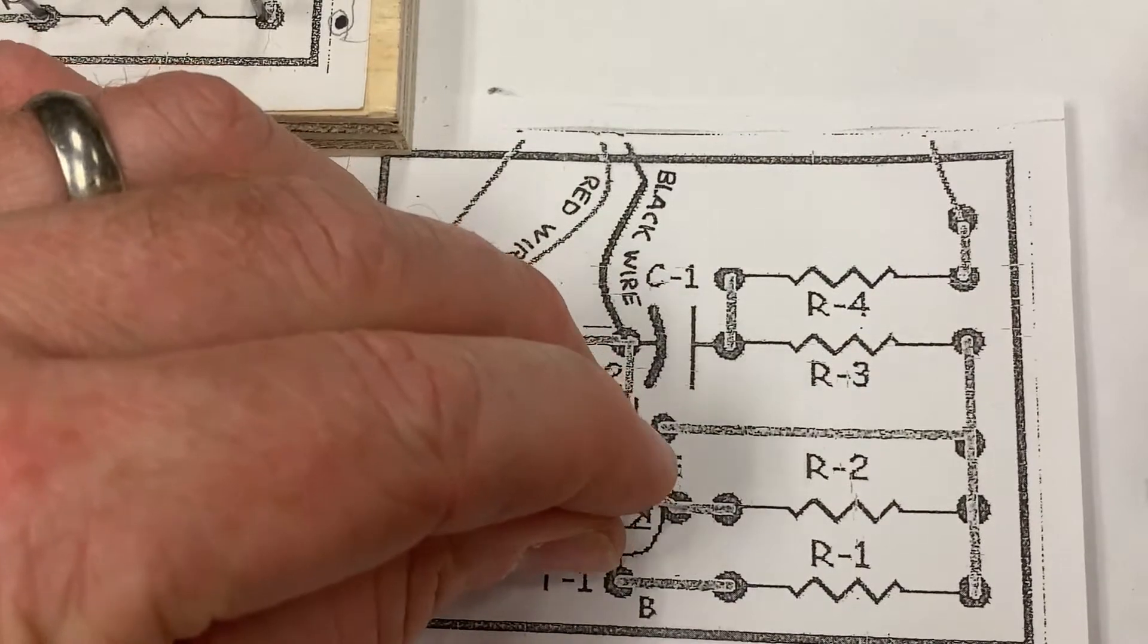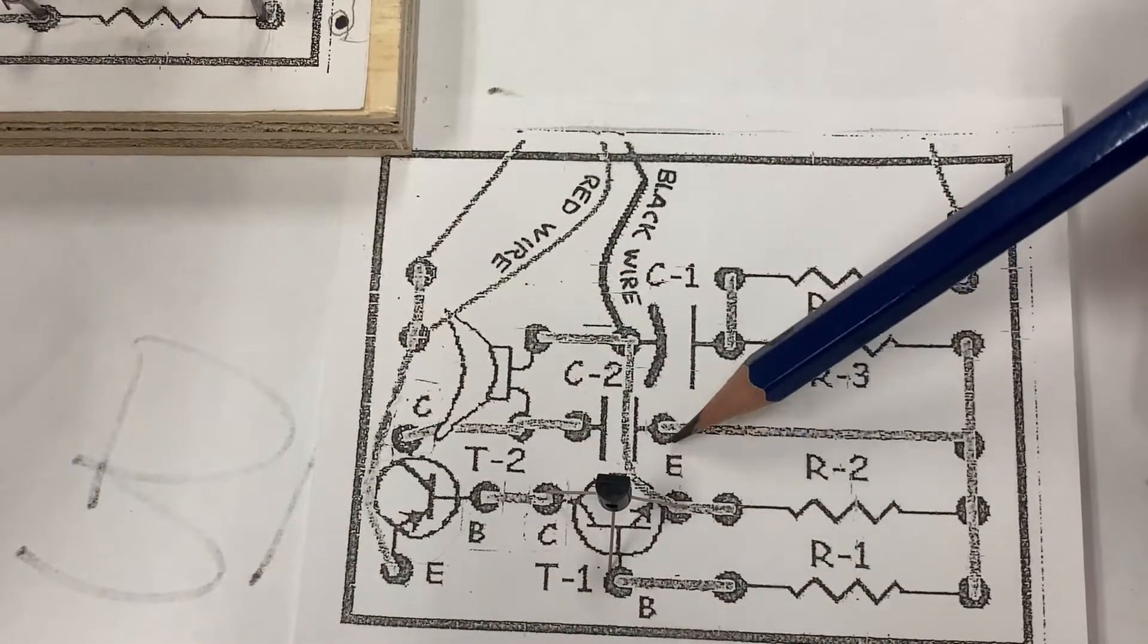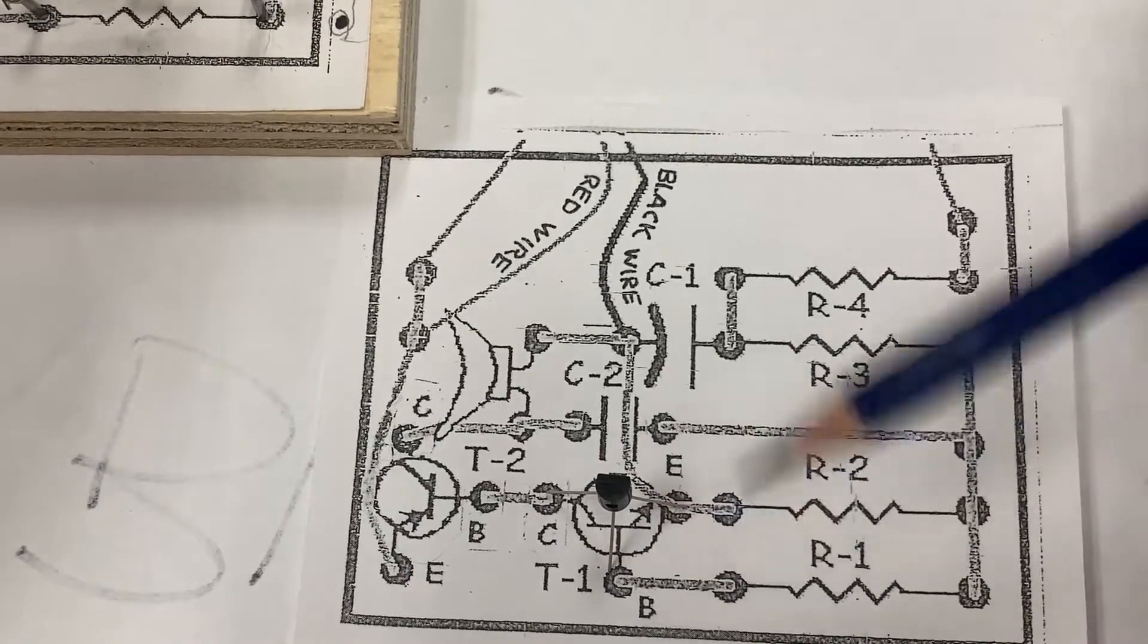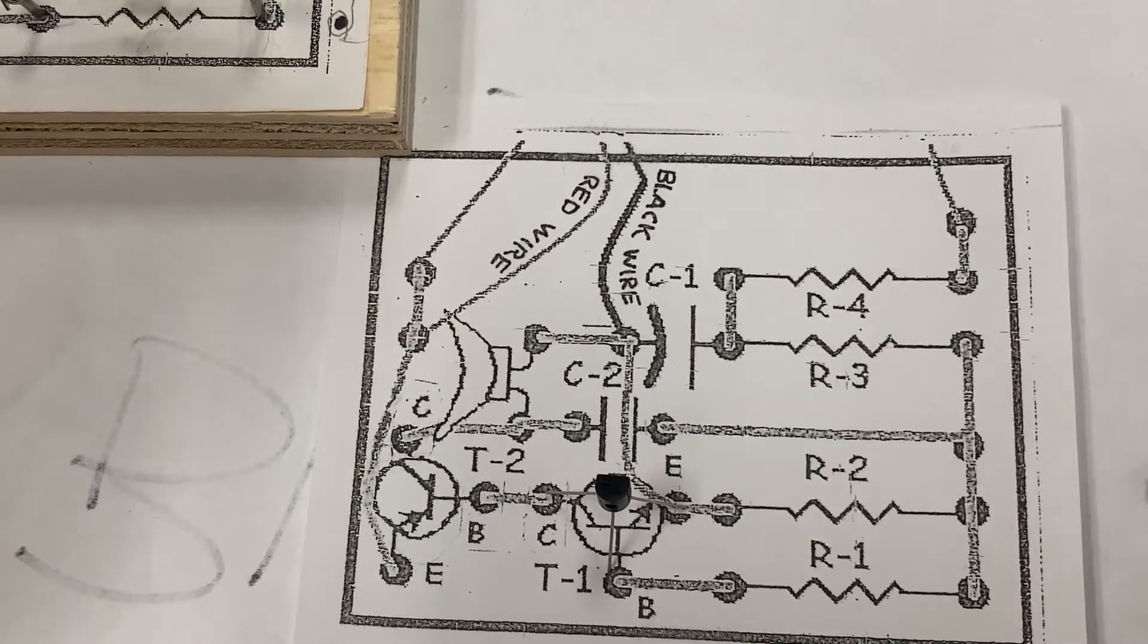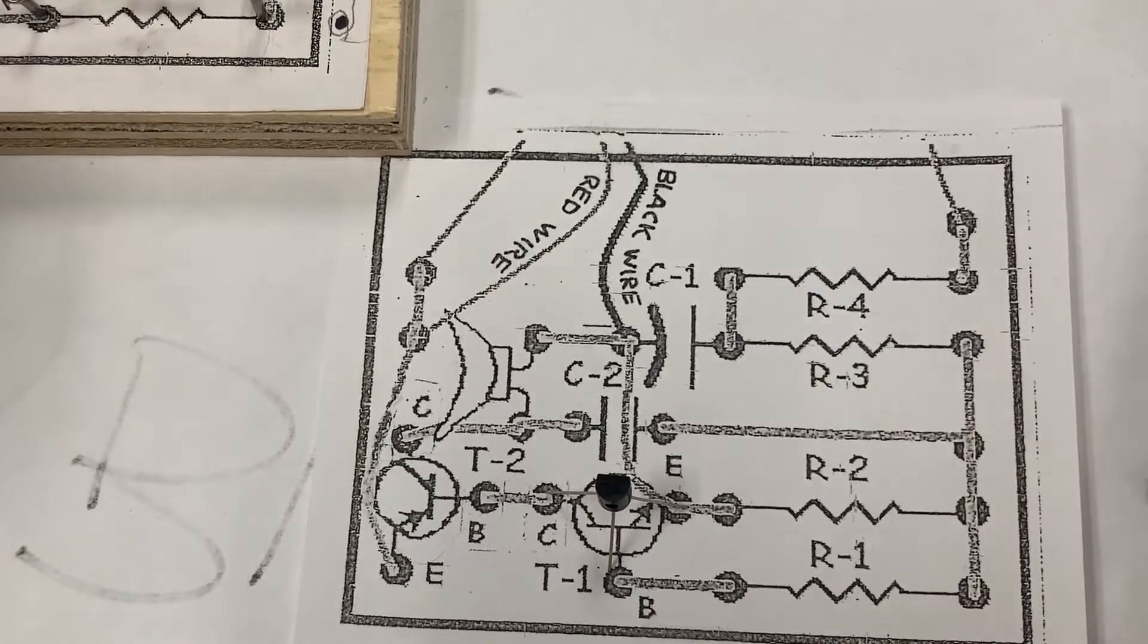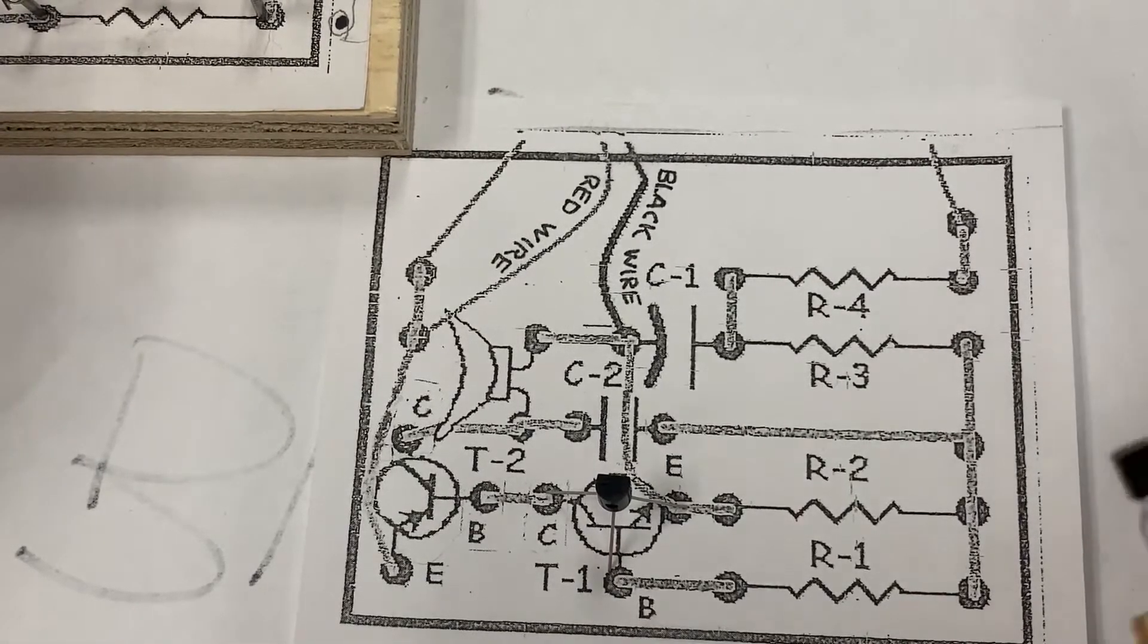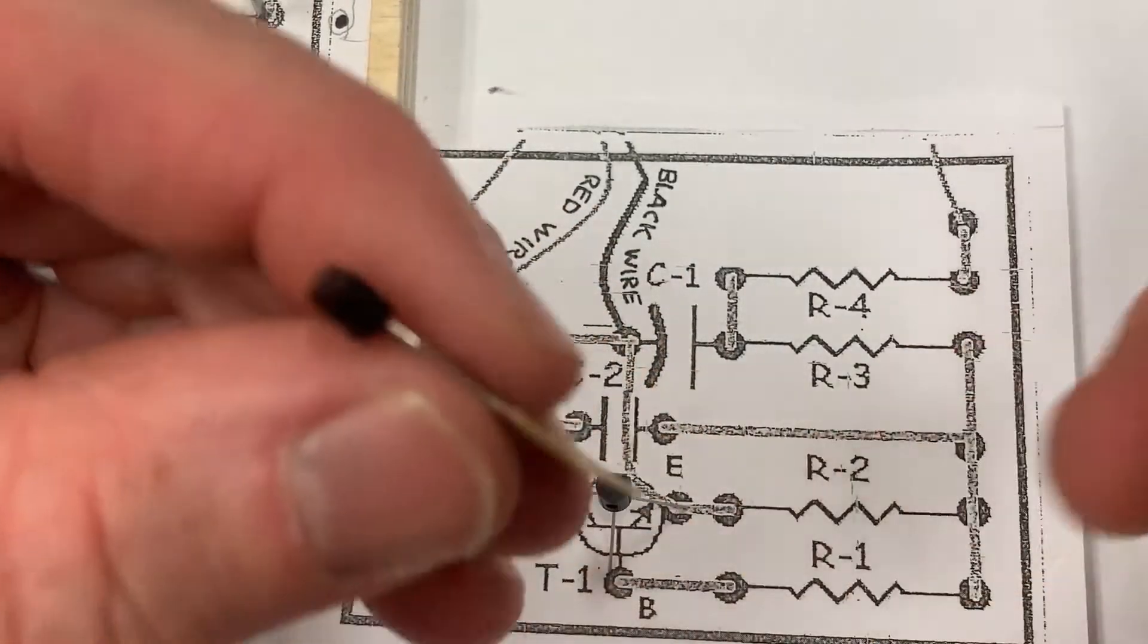So when I bend those legs gently, I can stand it up so that the E leg is coming down to the E nail. The B leg is going to the B nail, and the C leg is going to the C nail. We are then going to connect that onto our wires.